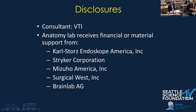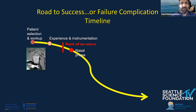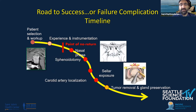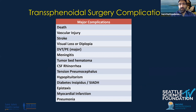My disclosures are none, none of which are relevant to this talk. This is a slide borrowed from my partner Dan Kelly. When we talk about understanding how complications occur in endonasal surgery, it happens along a timeline that starts with patient selection, your own experience, your institution's experience, equipment and instrumentation. At some point you'll reach a point of no return when the patient is wheeled into the operating room, then various phases: the nasal phase, the sellar phase, tumor resection, and reconstruction, followed by perioperative in-house and post-operative phases. At each of these points one can have challenges resulting in complications, so it's important to think about complications before you even step into the operating room.